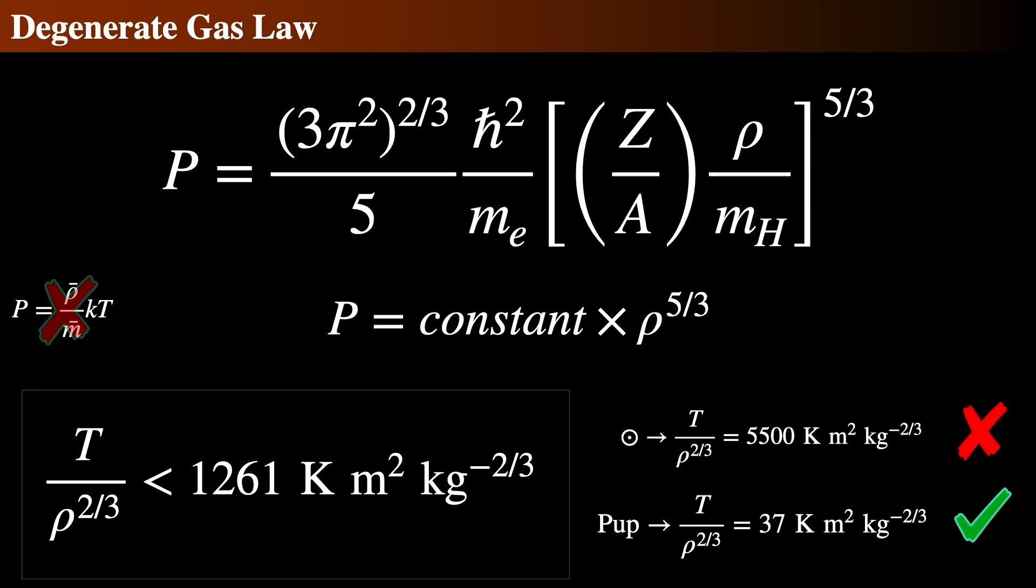In sum, a degenerate gas can occur at extremely high densities, and when it does, this new gas law takes over. This is the equation for a degenerate gas. I want you to note a few things.